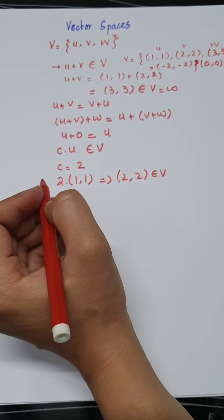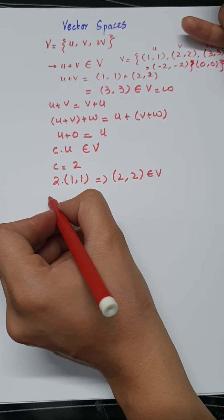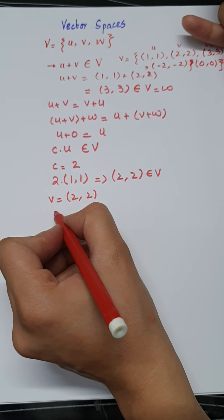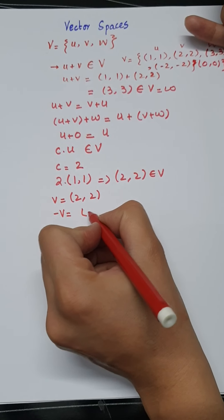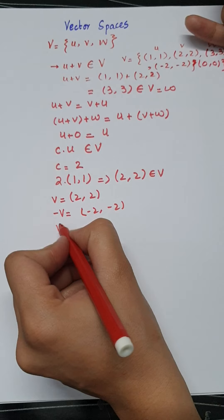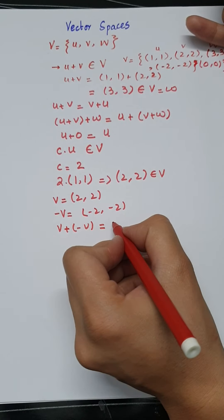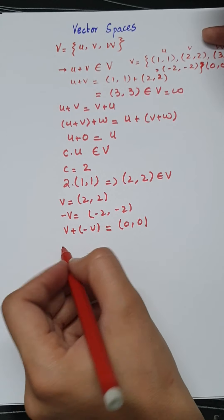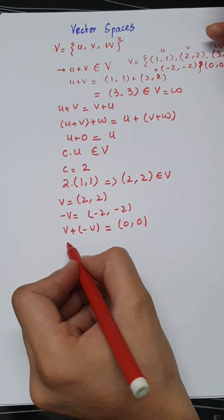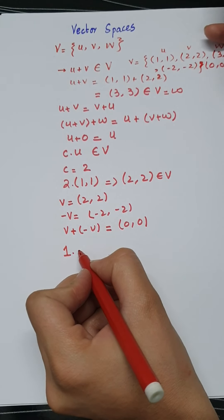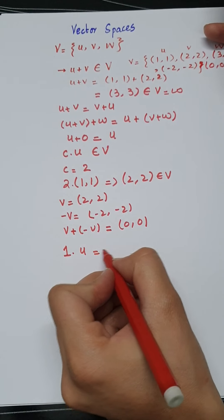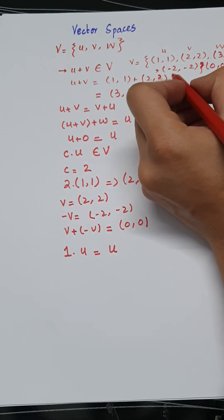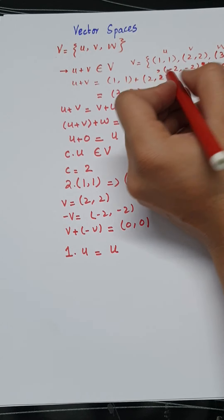Similarly, for the additive inverse property: if we consider vector V = (2,2), there must be some other vector negative V such that V plus (−V) equals (0,0). So the additive inverse must be present in the vector space V. The last property is multiplicative identity: if we multiply the vector by 1, it should give us the same vector U. So the identity element must also be part of the vector set.